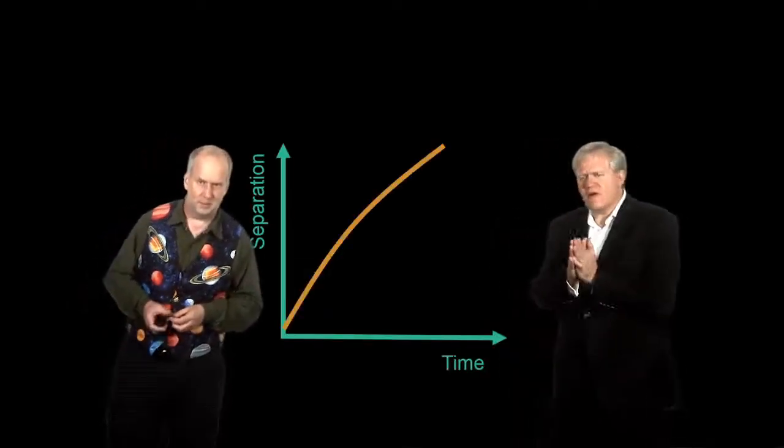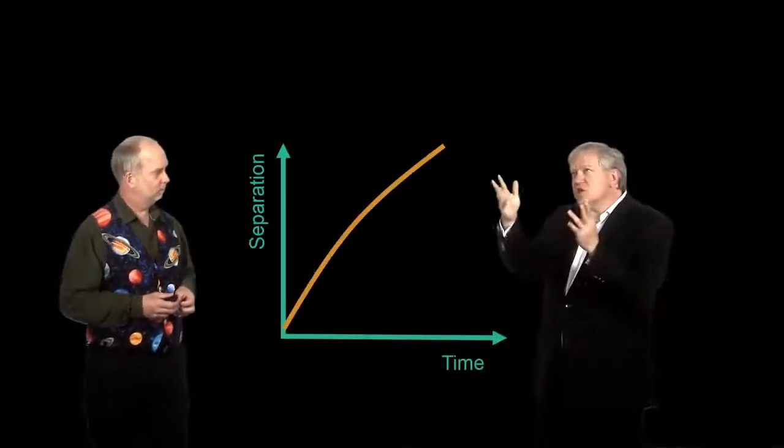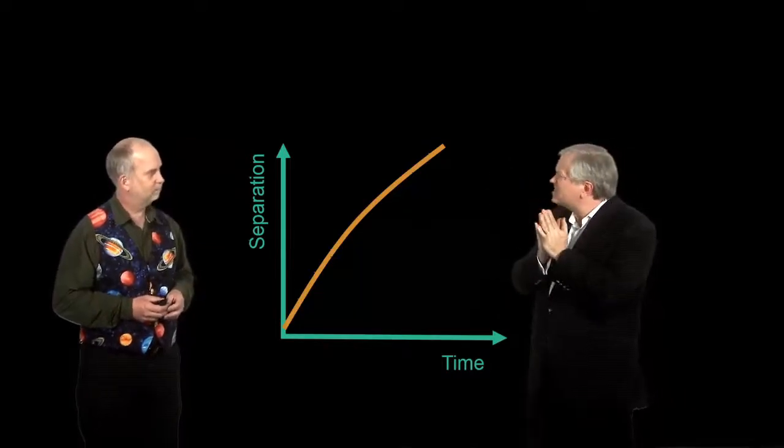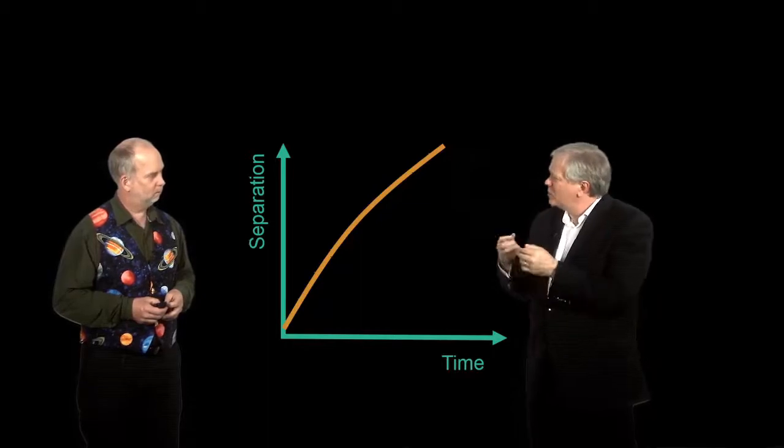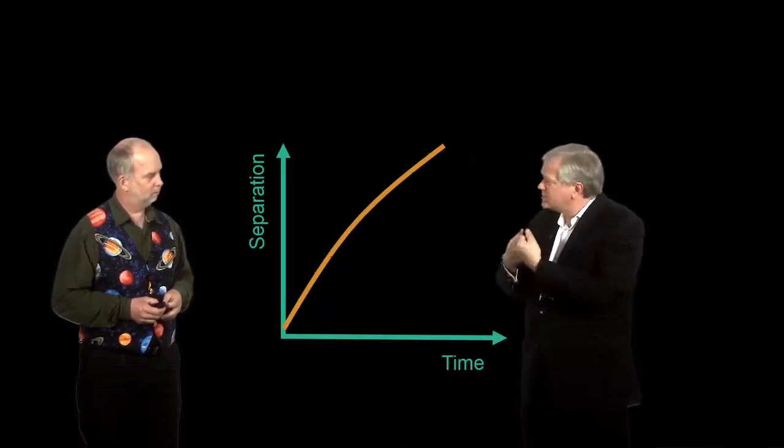Well, let's start with the first one. The fact that if I look at two things on the sky, they have essentially the same temperature now. They seem almost exactly the same. The only way we know how to do that is for them to have been in contact in the past.